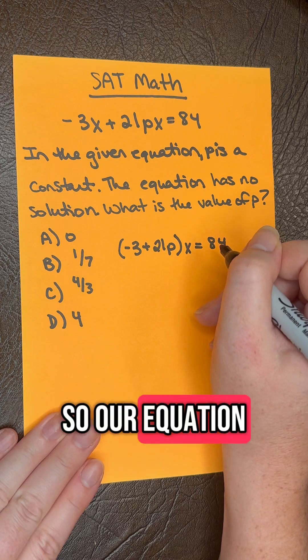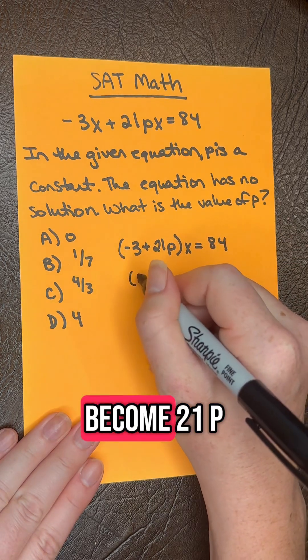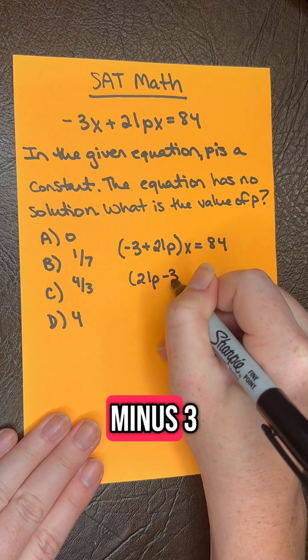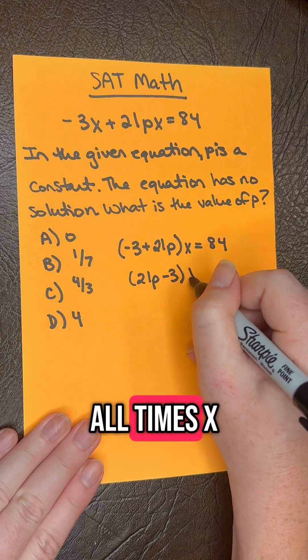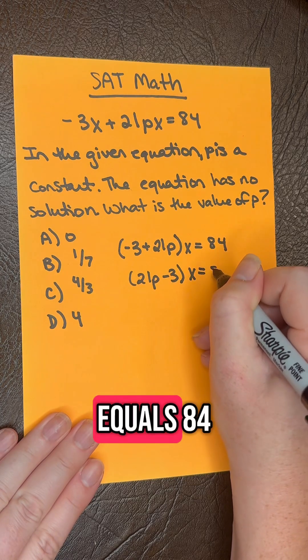So our equation is going to become 21P minus three, all times X equals 84.